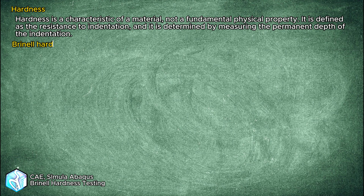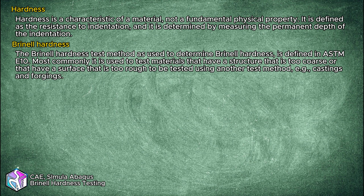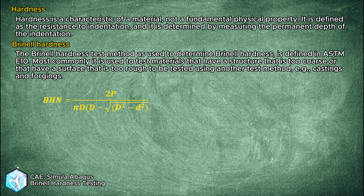The Brinell hardness test method is used to determine BHN and is defined by the ASTM E10 standard. It is usually used for structures with coarse structures like castings or forgings. During this test, we apply a predetermined load P to a carbide ball with fixed diameter D, hold this force for a predetermined time, then remove the force. The resulting impression is measured with a Brinell microscope or optical system across at least two diameters, usually at right angles to each other, and these measurements are the lowercase d.